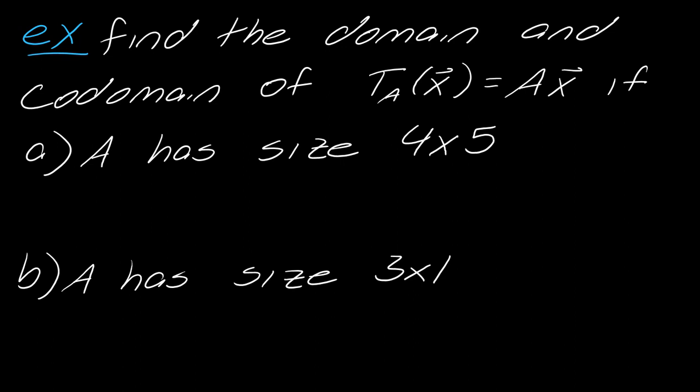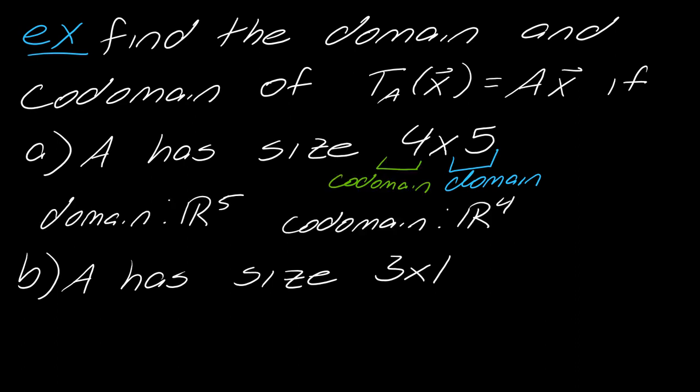So I just want to think about this idea of this Rn, Rm with a couple of specific numbers. So let's say that I have my transformation. So T sub A of X. So this will be defined by A times the vector X. So what is the domain and codomain if A has the size 4 by 5? So now the way that we're going to think about our matrices is that this last number is actually referring to a part of the domain. So this will be R5 while the first number is referring to the codomain. So it'll be R4. So my domain then is R5 and my codomain is R4.